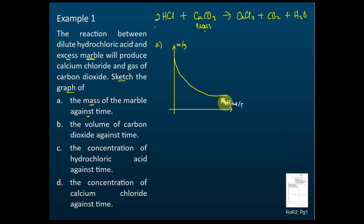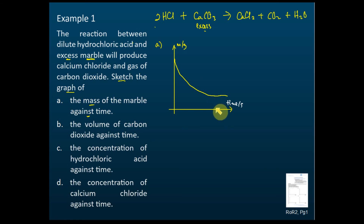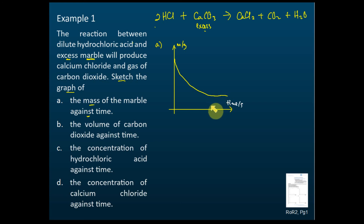There is another question here: why does the line finally become flat but not touch the horizontal axis? That is because calcium carbonate — the marble — is in excess. In excess means there is more than enough to react. So after the reaction, we still have some calcium carbonate left. Since there is excess calcium carbonate remaining unreacted, the mass does not become zero, and so the line does not touch the horizontal axis.